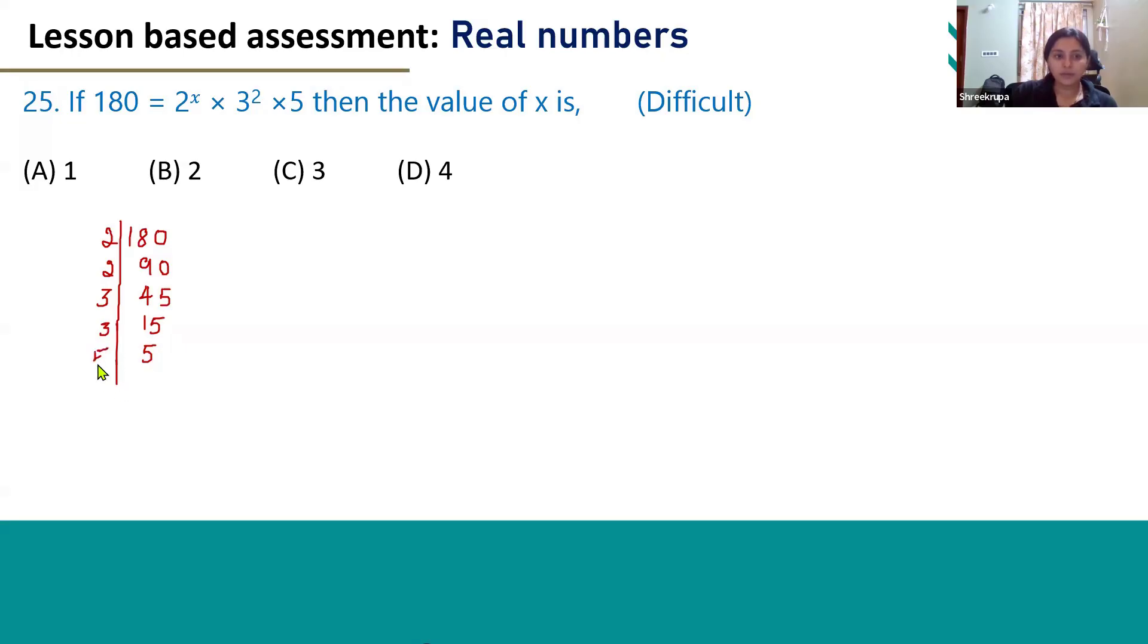So we have to use 5. 5 × 3 = 15. So the prime factorization of 180 is 2 × 2 × 3 × 3 × 5, that is 2^2 × 3^2 × 5.